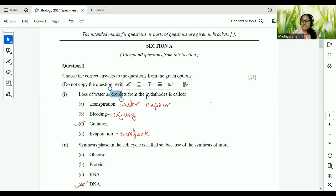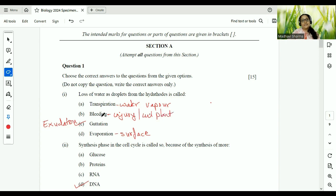Loss of water as droplets from the hydathodes is, of course, guttation. Droplets, hydathodes, leaf margins, guttation. Guttation for your information is also called as exudation. So children, if exudation also comes in the paper, please take that. Guttation and exudation means one and the same thing. If water vapor comes, loss in the form of water vapor, then it is transpiration. From injury or cut plant, then it is bleeding or from the surface that is evaporation.